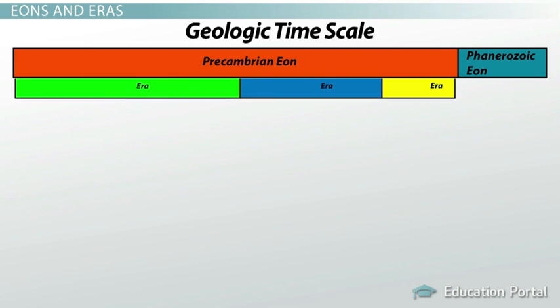The next subdivision down from the era is the period — a division of geologic history that spans no more than 100 million years. You're probably most familiar with the periods of the Mesozoic Era: the Triassic, the Jurassic, and the Cretaceous Periods. These are the periods that included our most favorite dinosaur species, like the Triceratops and Tyrannosaurus rex. Today, we live in the Quaternary Period of the Cenozoic Era.